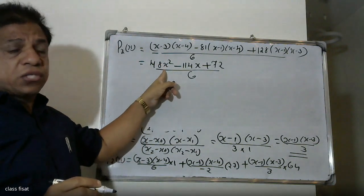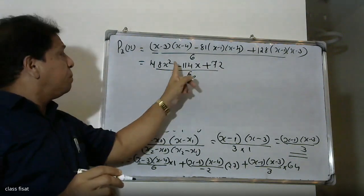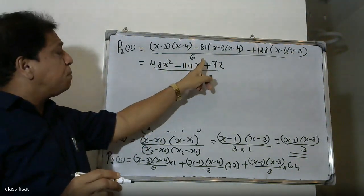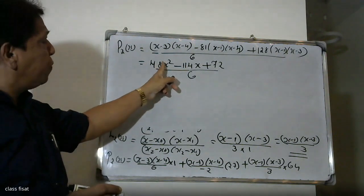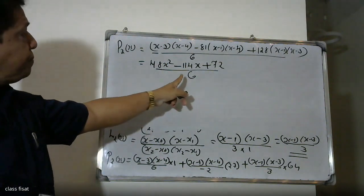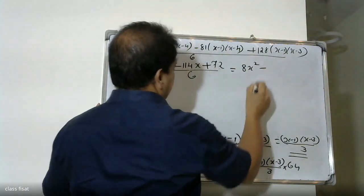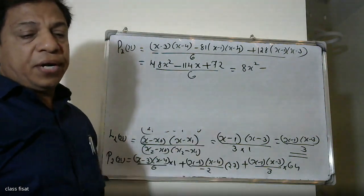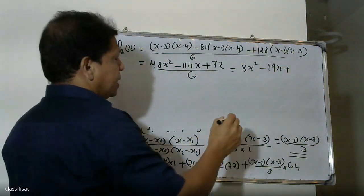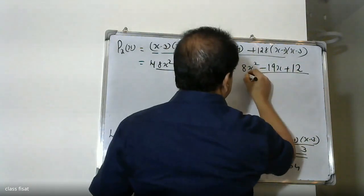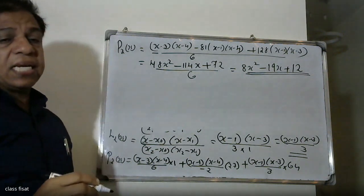Simplifying: x squared terms give 48x squared, combined with minus 1.4x plus 72, all divided by 6. After further simplification, we get 48x squared minus 104x plus 90x plus 72, divided by 6. The final polynomial simplifies to 8x squared minus 19x plus 12.